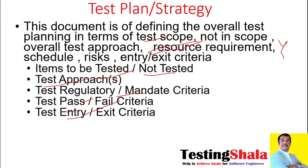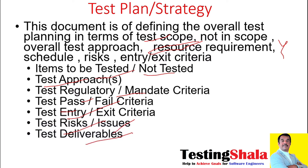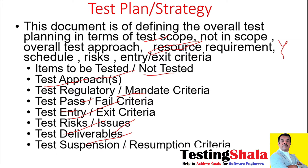We define the entry and exit criteria for every testing type — unit testing, functional testing, system testing, regression testing, user acceptance testing — so that it becomes very easy for all stakeholders to see where we are in our testing journey. We also define the risks and issues we need to consider when planning the testing cycle, and the different test deliverables we are going to produce as part of our overall testing journey.